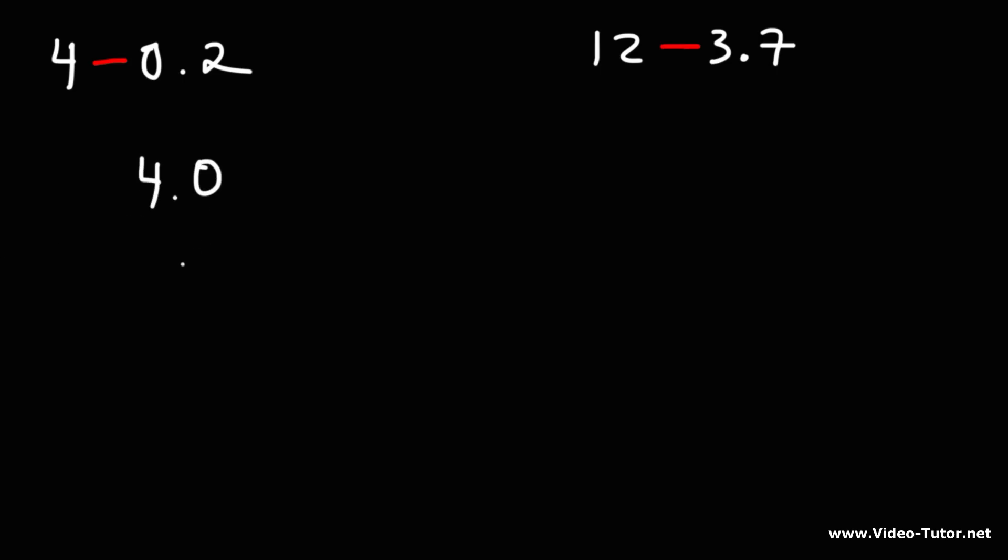4, we can write that as 4.0, and 0.2 is just 0.2. The first number goes on top, the second number goes on the bottom, and typically the first number when you're subtracting is usually the large number. Otherwise, you'll get a negative result.